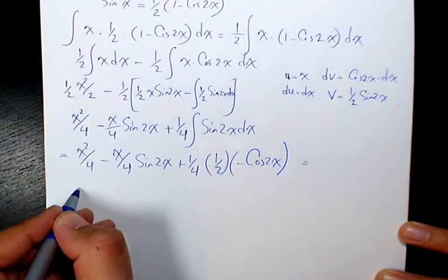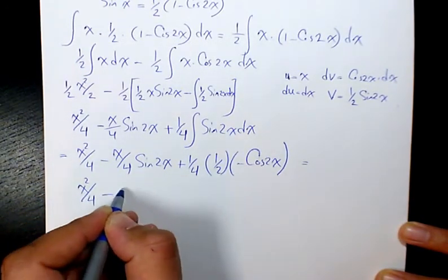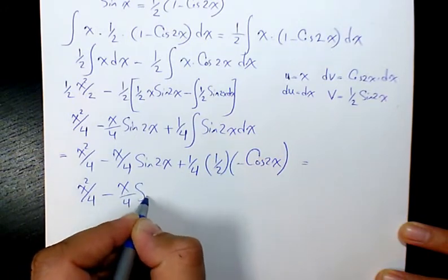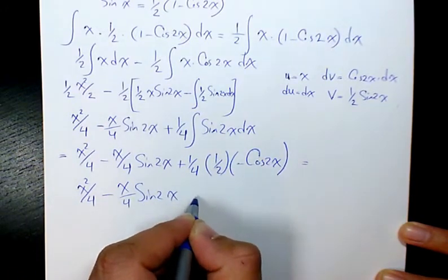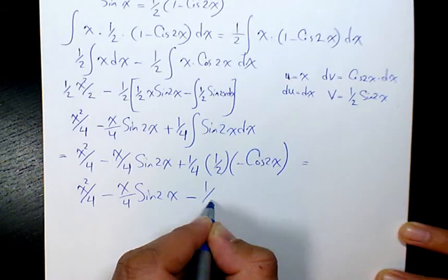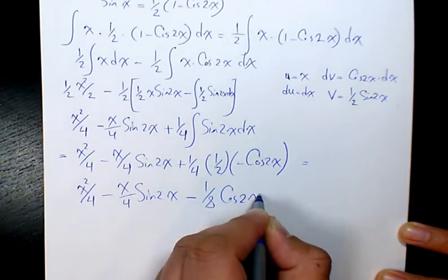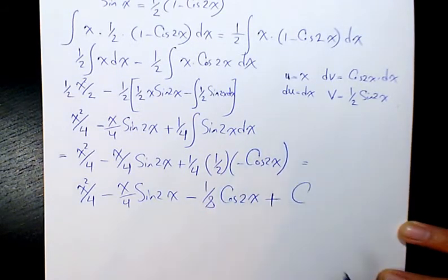Therefore it's going to be x squared divided by 4 minus x over 4 sine 2x minus 1 over 8 cosine 2x plus a constant number.